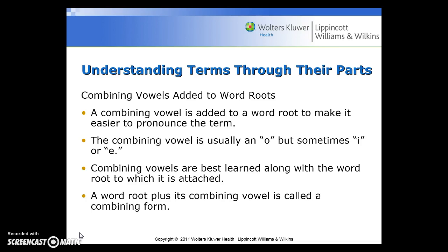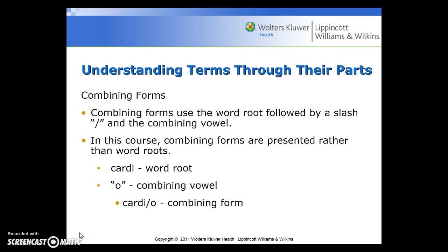A combining vowel is added to a word root to make it easier to pronounce the term. The combining vowels most commonly used are 'o' but sometimes 'i.' Combining vowels are best learned along with the word root to which they're attached. A word root plus its combining vowel is called a combining form, represented as the word root followed by a forward slash and then the vowel — for example, cardi/o becomes 'cardio.'